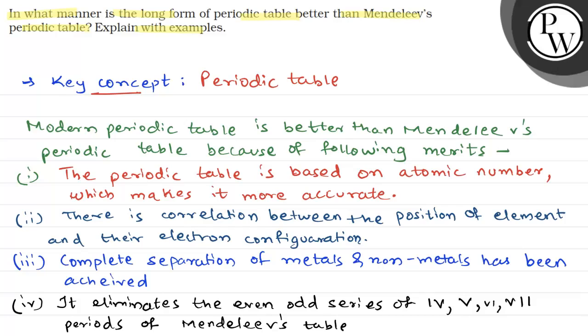So, these were some of the merits that made the modern periodic table better than Mendeleev's periodic table. Hope you have understood it well. Best of luck.